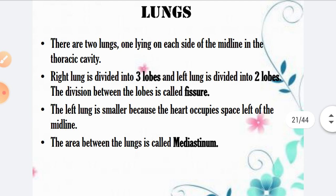Now studying another structure, that is the lungs. There are two lungs, one lying on each side of the midline in the thoracic cavity — the right lung and the left lung. The right lung is divided into three lobes and the left lung is divided into two lobes.